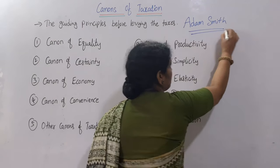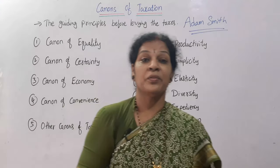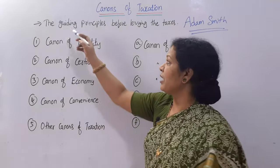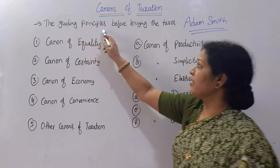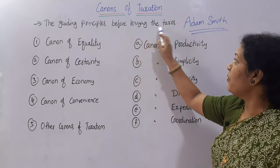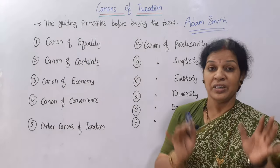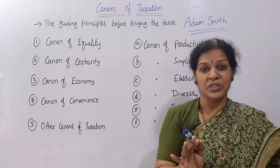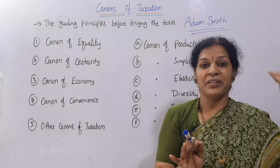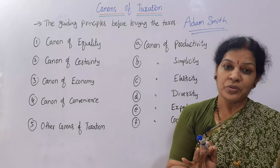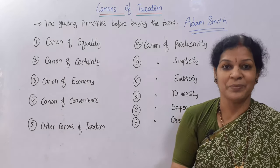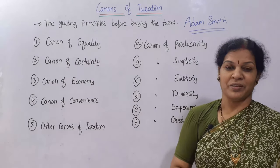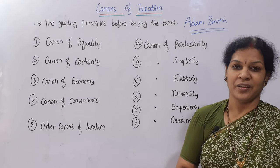Adam Smith introduced certain canons of taxation. Canons of taxation means nothing but rules — guiding principles that must be remembered before levying taxes. There are generally five canons framed by Adam Smith. Let us discuss each and every one of them.